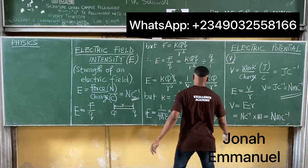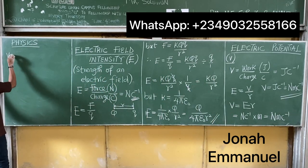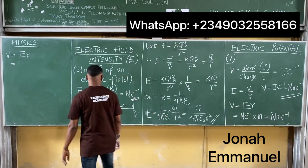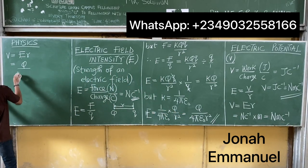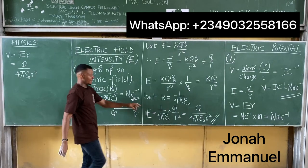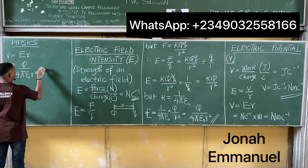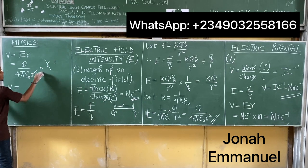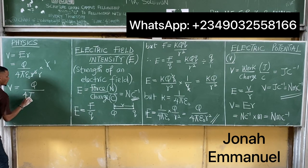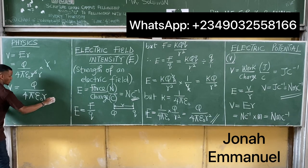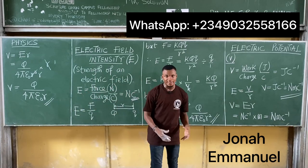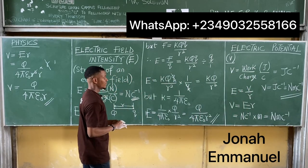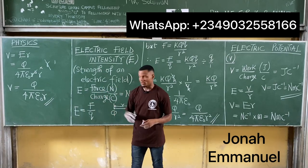Let's dive deeper into electric potential and get the formula for it. We said electric potential V is equal to E times R — electric field times distance. Electric field E is equal to Q over 4πε₀R squared. Multiplying by R, this becomes the formula for calculating the electric potential at any point. The formulas for electric field intensity and electric potential are very similar. We will take some examples and work on each of them.